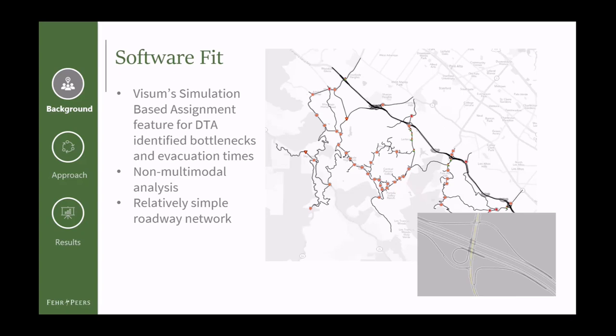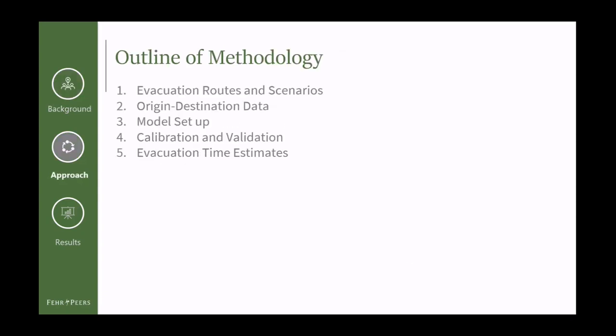It was also relatively easy to import our zone structures and travel demand data. For our project, we first identified key evacuation routes and scenarios with the help of the emergency preparedness committee. Then we set up our origin-destination data, our transportation network and procedure parameters, and then did calibration and validation for our model before producing our evacuation travel time estimates.